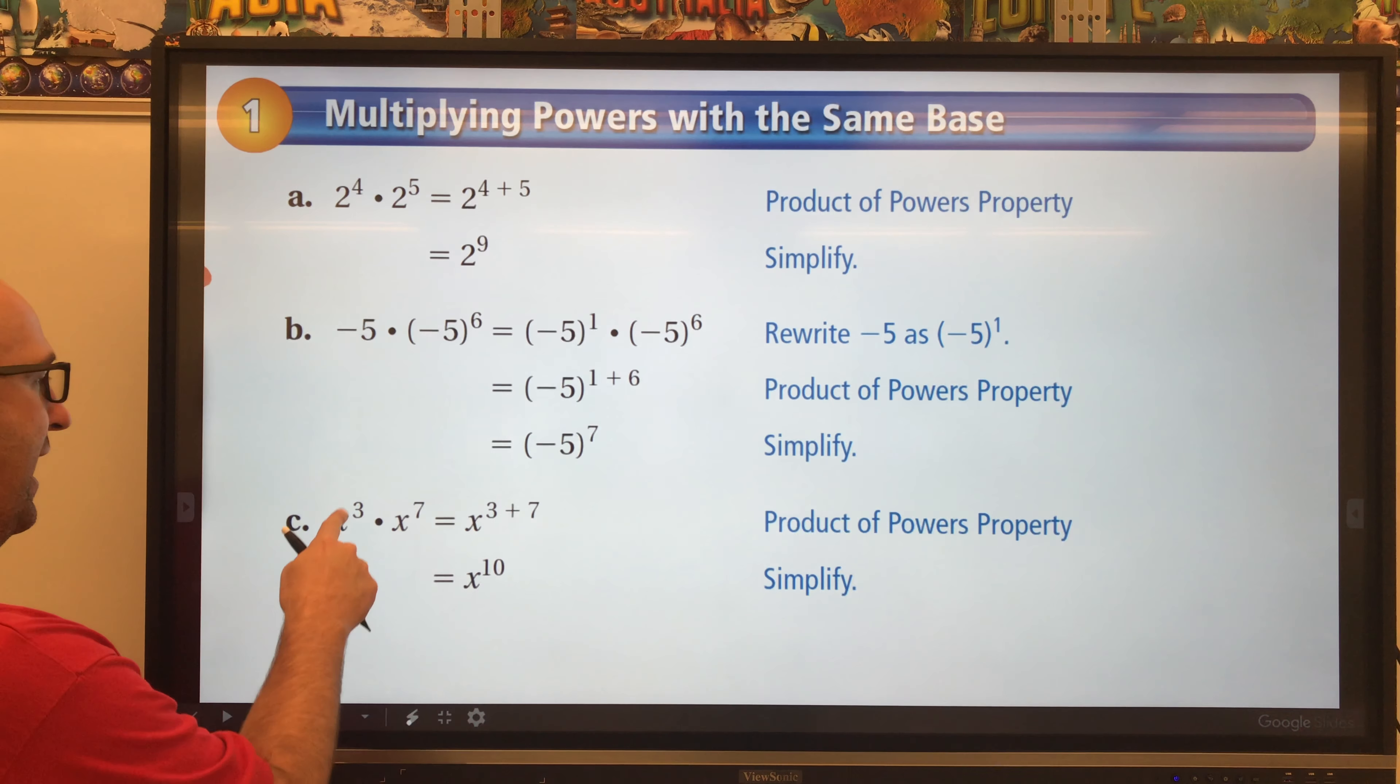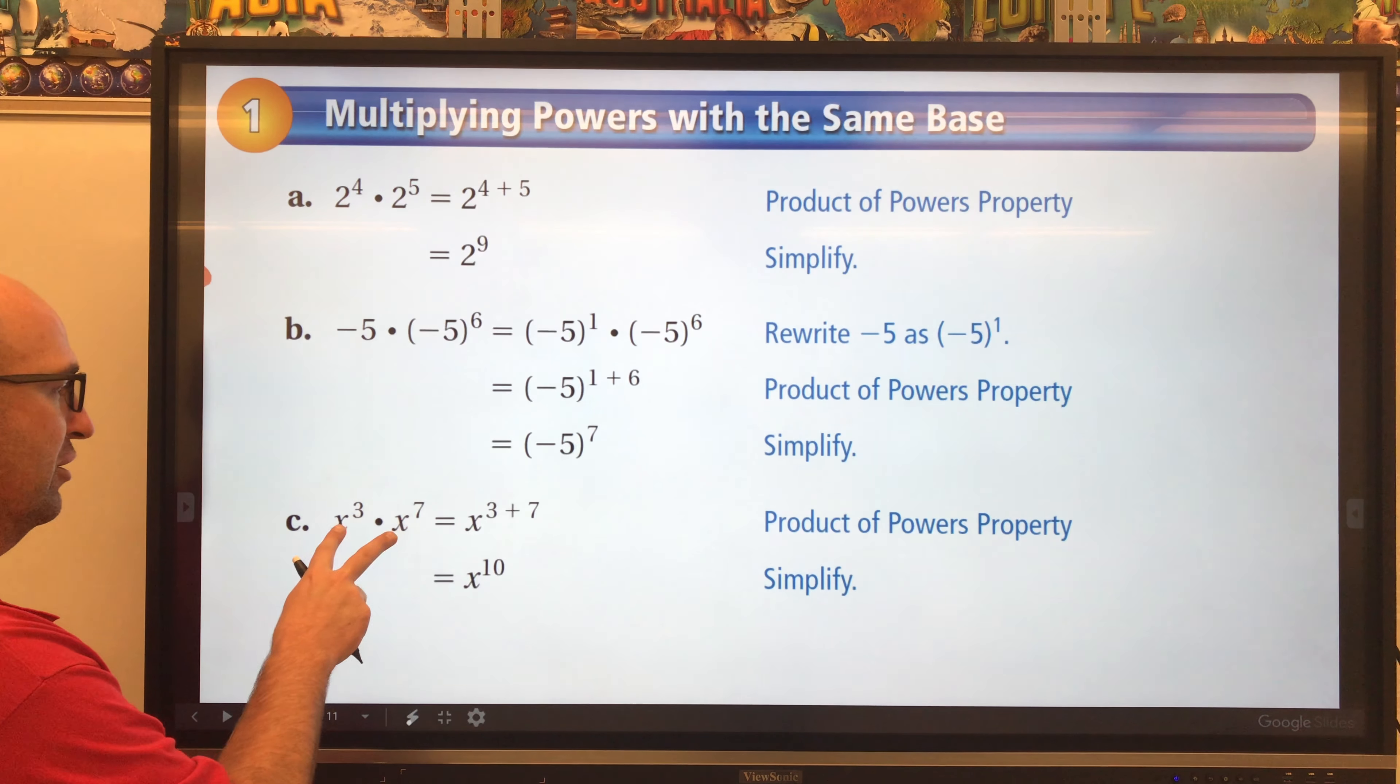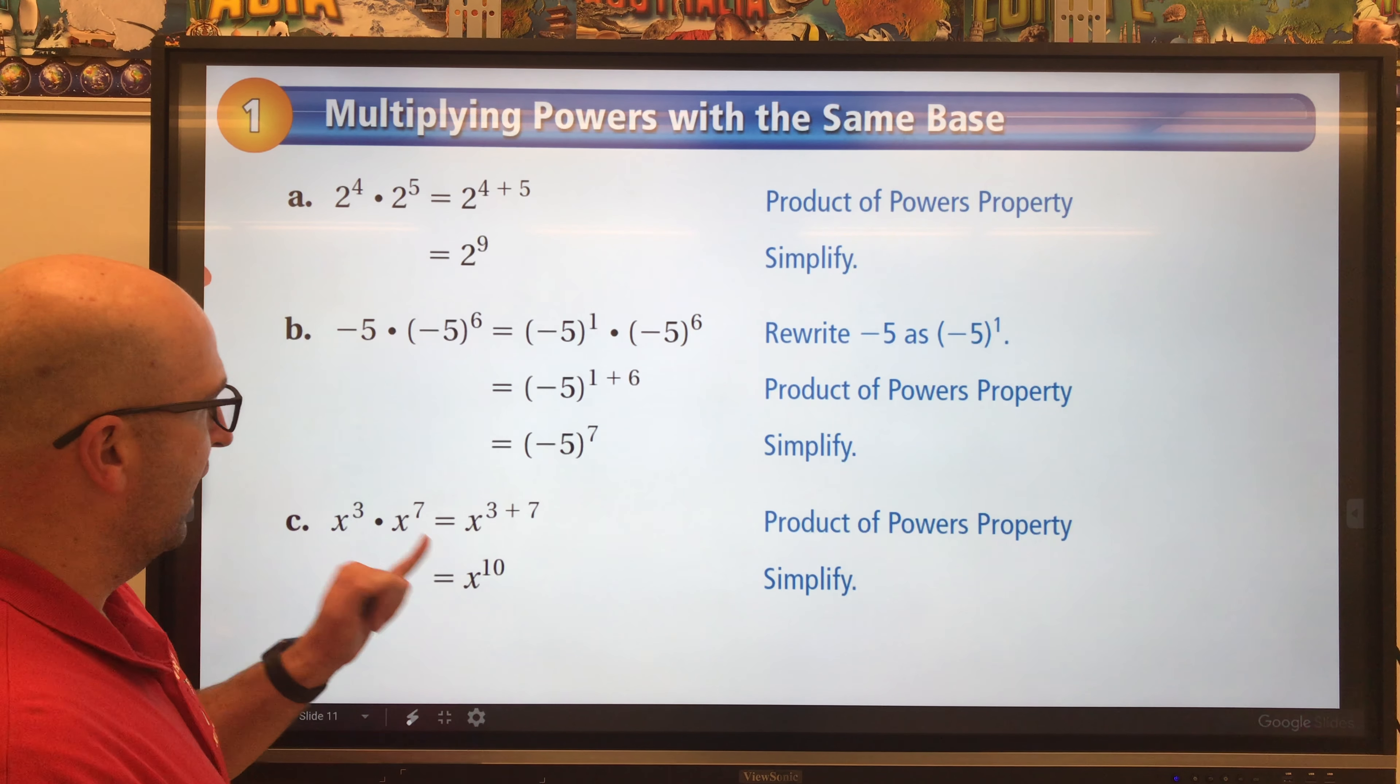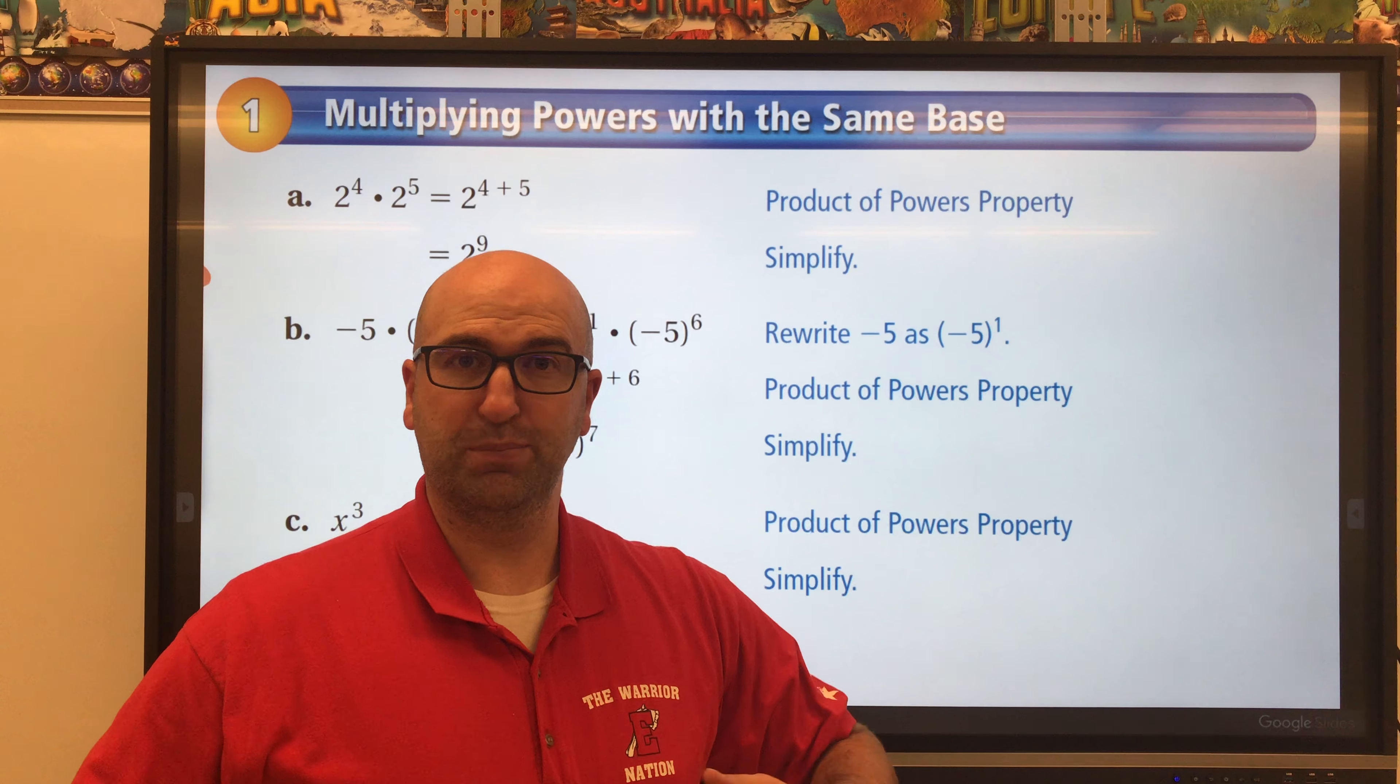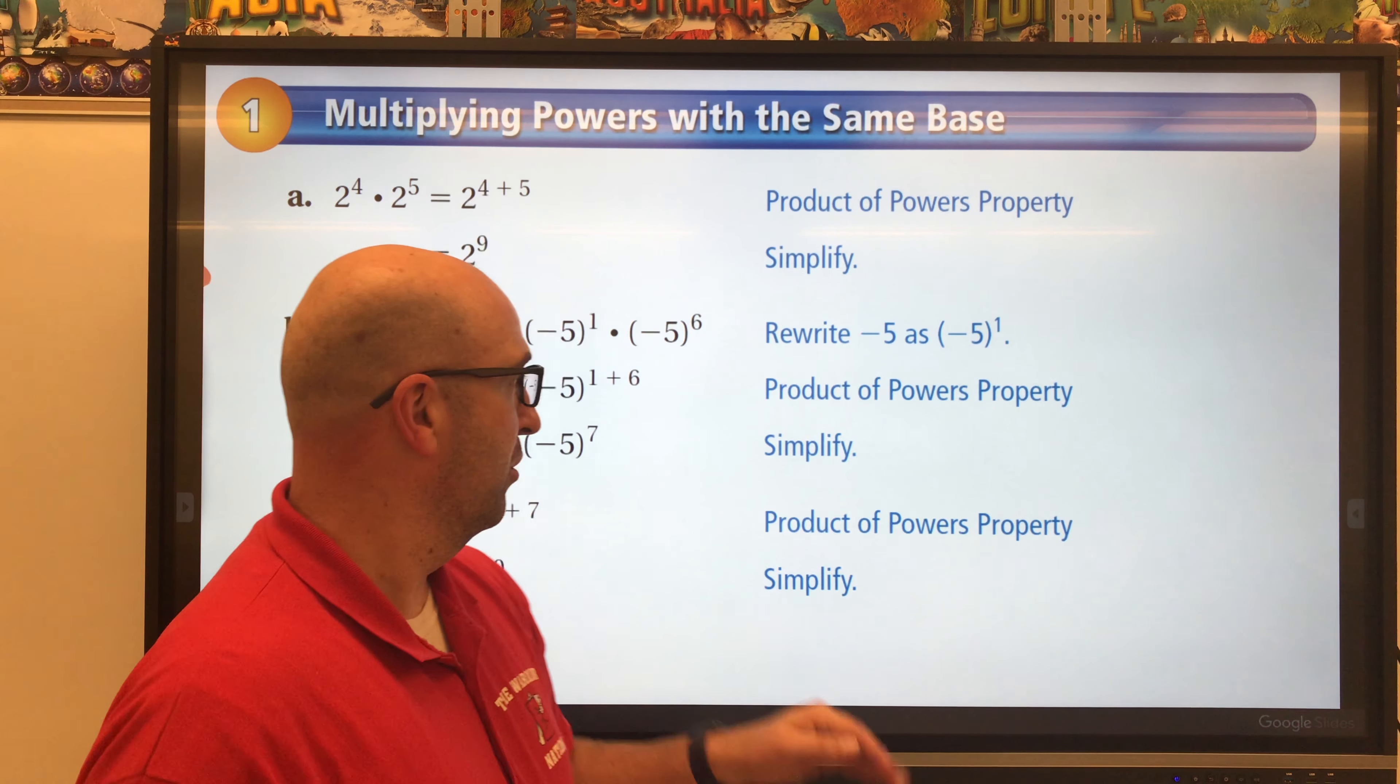Last example here. X to the third times x to the seventh. Multiplying those together, we have the same base and I'm just going to add my exponents together. X to the tenth. So Product of Powers Property is pretty easy. All you have to do is add the two exponents together to get your new power.